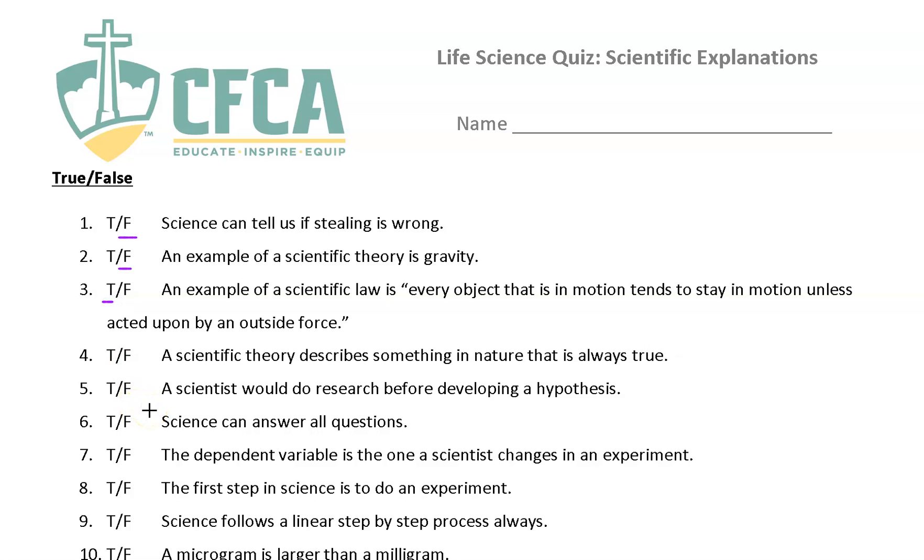A scientific theory describes something in nature that is always true. Well, the key word is always, right? And so, for example, cell theory, we don't know where the first cell came from, theory of evolution. We can't answer everything involving the theory of evolution. We weren't there to observe it. So that's false. There's some things about theories that we can't prove to be absolutely true. And that's why they're theories. Although they are backed, remember, they are backed by a lot of good science.